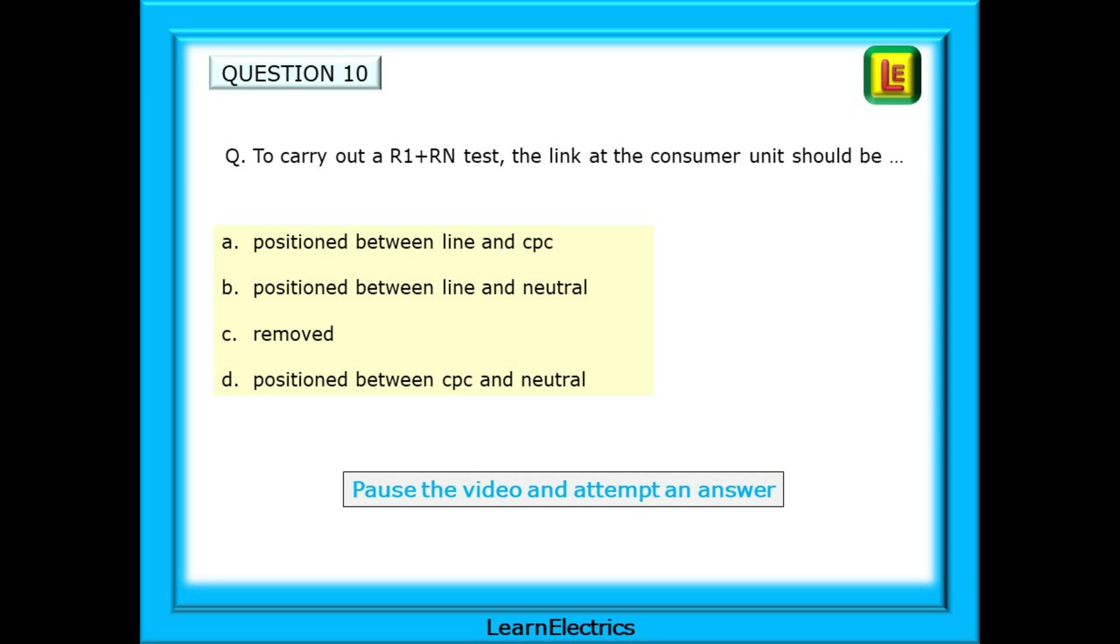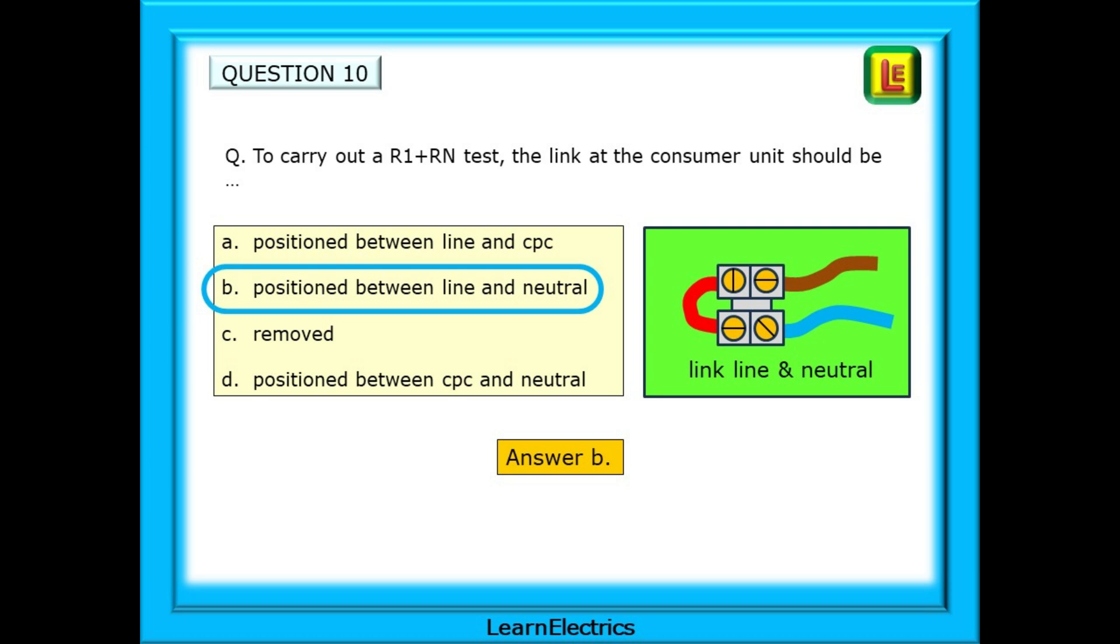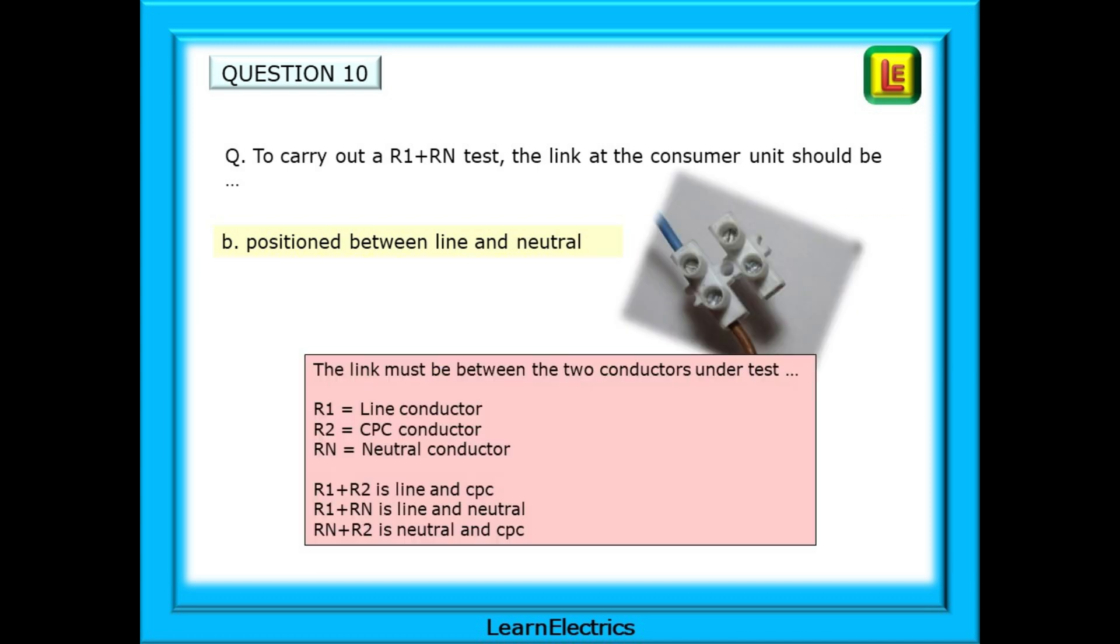You should have answer B. The link should be positioned between the line and neutral conductors. The link must be between the two conductors under test. Remember, R1 is the line conductor, R2 the CPC conductor, Rn the neutral conductor. This means that R1 plus R2 is line and CPC, R1 plus Rn is line and neutral, and Rn plus R2 is neutral and CPC.